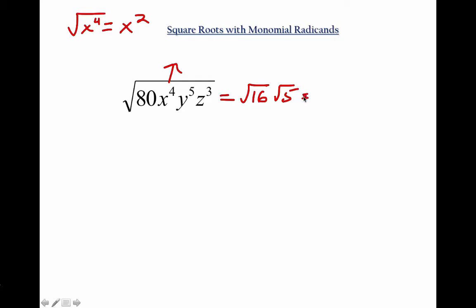So I want evens. So I'm going to do, that's going to be times square root of x to the 4th. And then my y to the 5th, I'm going to change it into 4 of them and 1 of them. And my z cubed, 2 of them and 1 of them.